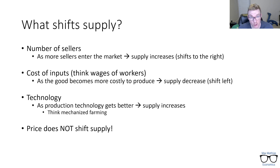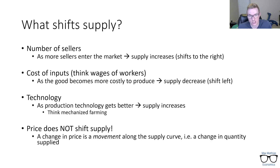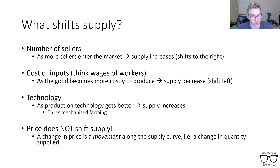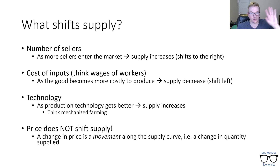The one thing that does not shift supply is price. Why would a price change not shift supply? Because it's already shown on the graph. A change in price is a movement along the supply curve — that is a change in quantity supplied. If you're taking a principles of micro class, you will be asked which of the following does not shift supply. The answer is always price, because the graph we're looking at is price and quantity — price moves, and we just show that by moving somewhere else on the graph.